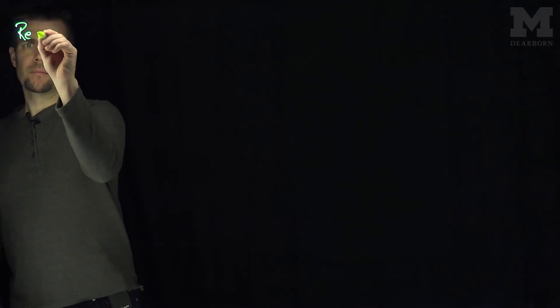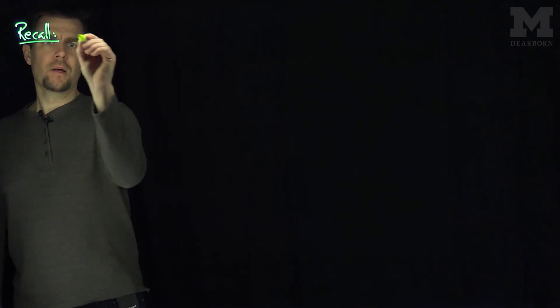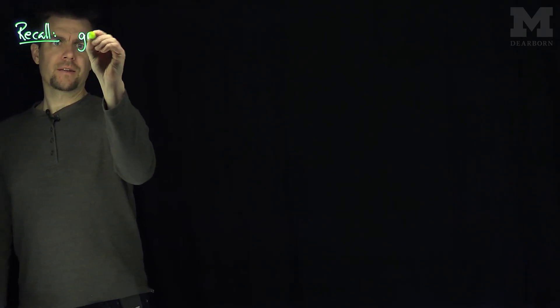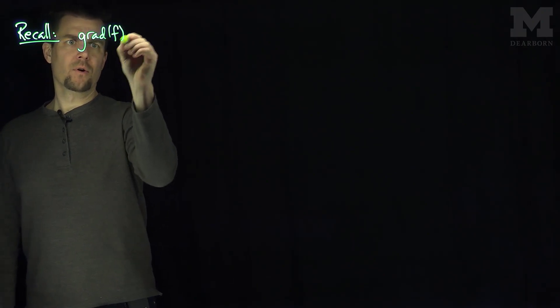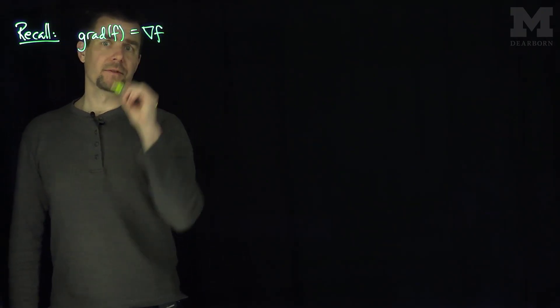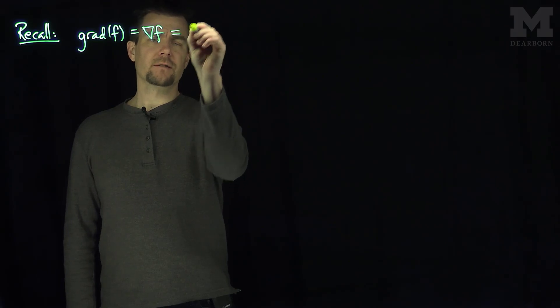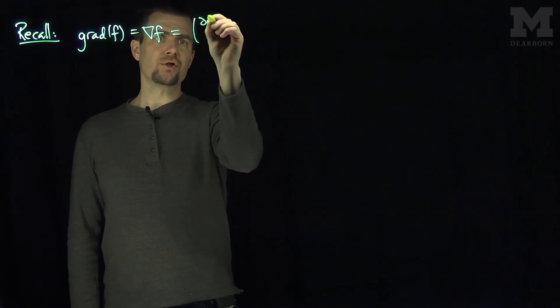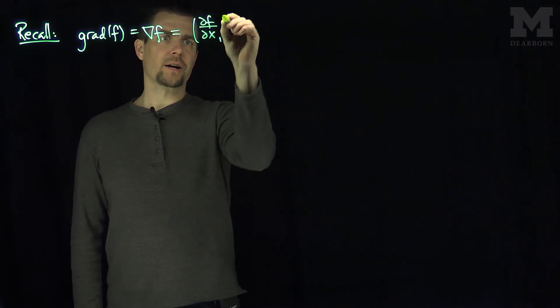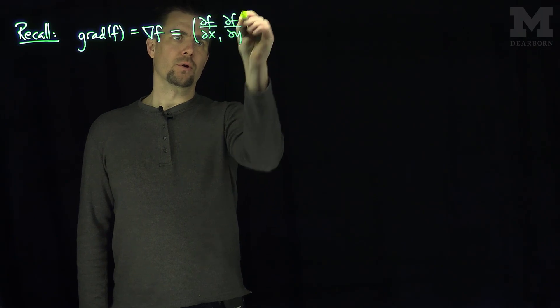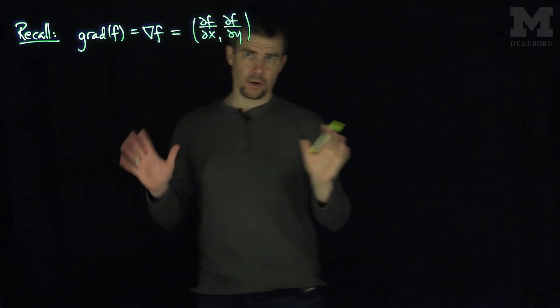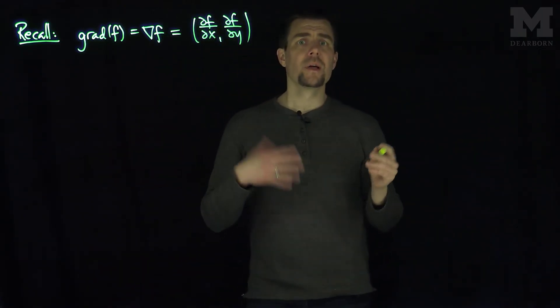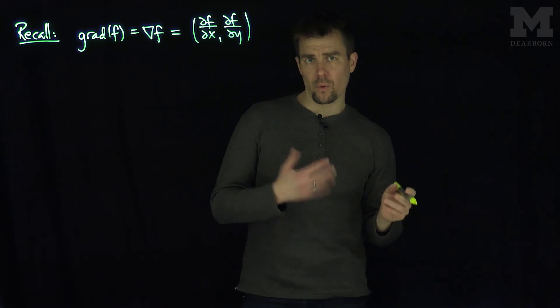Hello, students. In this video, we'll see how to compute the gradient in polar coordinates. The gradient, grad f or nabla f, is a vector field. In Cartesian coordinates it is (∂f/∂x, ∂f/∂y). We'd like to find the gradient in polar coordinates.